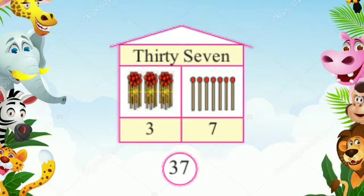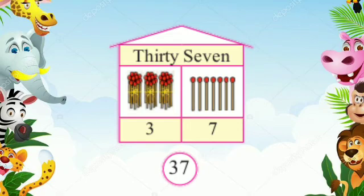To understand a 2-digit number, we will look at how many bundles of 10 there are in the tens place, and how many single units there are. For example, in 37 there are 3 bundles in the tens place and 7 single sticks in the units place.